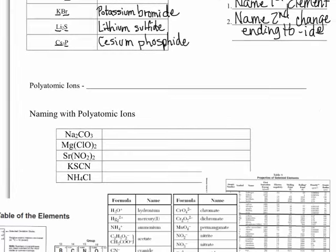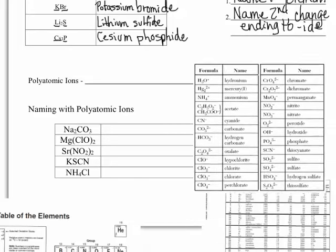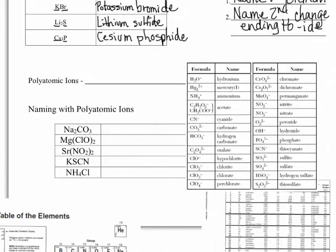Before we can complete that, we need to define what polyatomic ions are. Polyatomic ions are covalently bonded molecules that have a charge. We'll get more into what covalently bonded means, but essentially they stick together really well and they have a charge. We kind of name them as if they're their own thing because they're going to stay together even typically through a reaction. I want to direct your attention to table E in your reference tables, which has a bunch of the polyatomic ions along with their names.